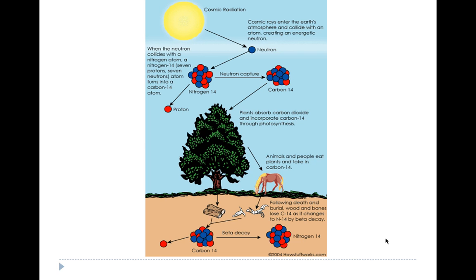Carbon-14 is created by cosmic radiation, basically sunlight, coming into our atmosphere. What happens is they collide with an atom, creating an energetic neutron. That neutron strikes nitrogen-14 and is captured. The neutron is captured and releases a proton, changing it into carbon-14. So carbon-14 is constantly being generated by sunlight in our atmosphere.